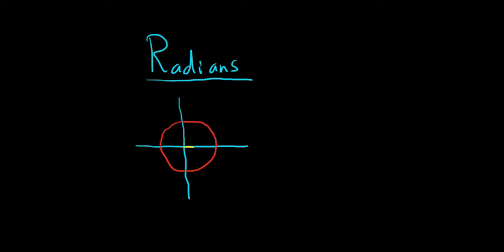And then here we have the initial side of our angle, and then here is our terminal side of our angle. And we're going to pretend that this circle has radius r, and then we're also going to pretend that this arc length here is r. So whenever that happens and we have an angle here, which we'll call theta, then we say that theta is equal to 1 radian. So that is the definition of a radian.